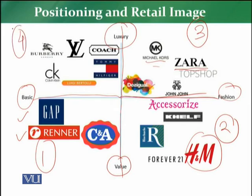In the fourth quadrant, we have brands that sell basic — not fashion — products but at a luxury level. Burberry is a very good example, CK is a very good example, and Tommy Hilfiger is a very good example. These fourth-quadrant retailers offer standardized basic products but are focused on luxury. So if a customer wants basic products but also wants luxury, they go for Burberry, CK, Tommy Hilfiger, or Coach. These four quadrants are very good ways to specify and clarify the positioning concept in retail.